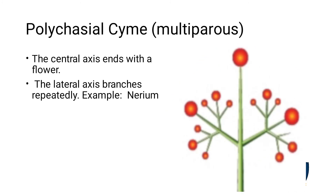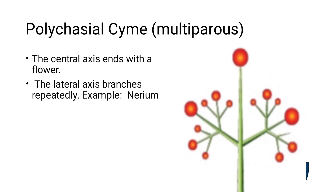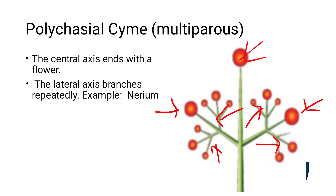Polychasial cyme. In polychasial cyme, you can see compound branching — this one and this one branch. In polychasial, there are multiple branches forming one type on this side, one type on that side, and one type on another side. So many polychasial cymes arise from the branches. Example: Nerium.